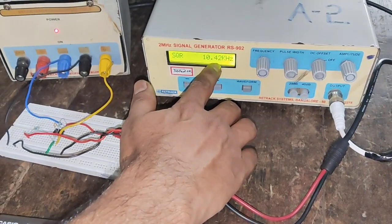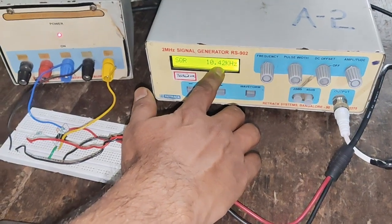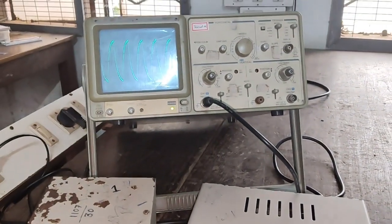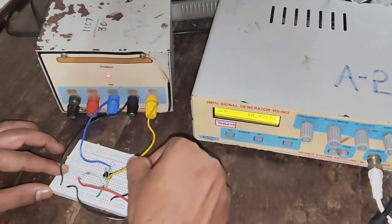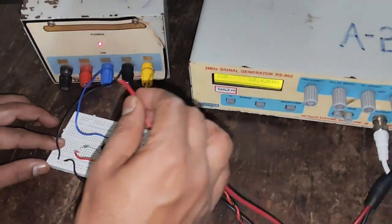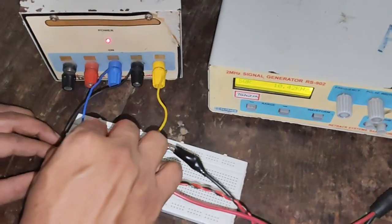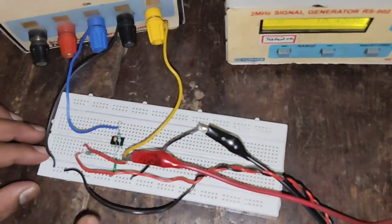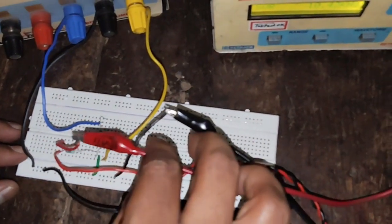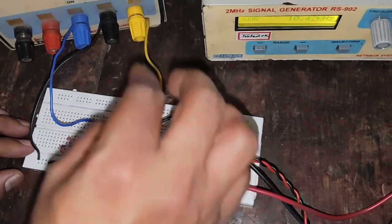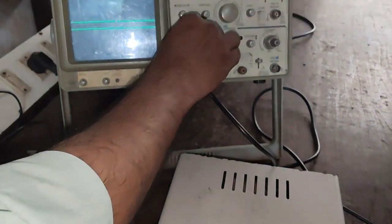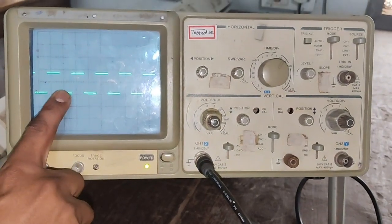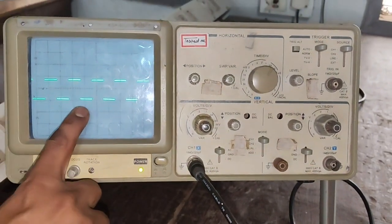The same signal can also be observed in the CRO. Here we can see that we have to connect this to input signal. I will connect this CRO pin positive to the input. I have connected here to the input. And now we will check this signal. Here we can see that this is a square wave which is coming from function generator.